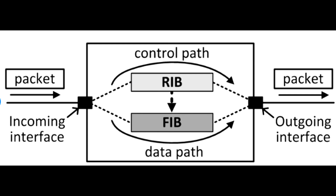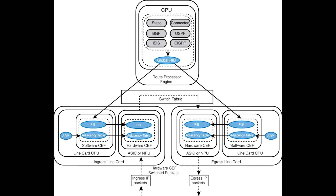Conversely, the Forwarding Information Base, or FIB, has a more focused role within the router. Derived directly from the RIB, the FIB contains a subset of information critical to packet forwarding. FIB distills this comprehensive information into an efficient and streamlined set of next-hop entries. It represents the best path to reach each destination, ensuring optimal packet forwarding.